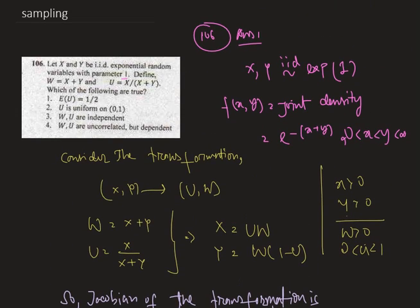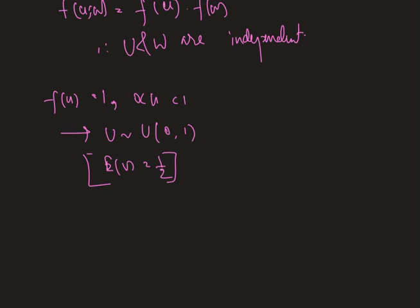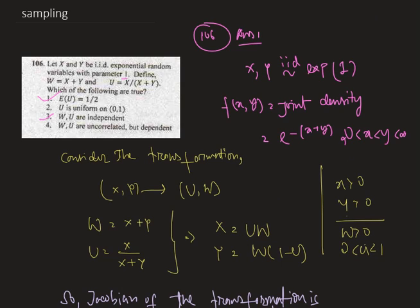So option 3 is already correct. Now f of u is equals to 1 whenever u is 0 to 1. That means u follows uniform 0 to 1. Therefore expectation of u is half. So option 1 is also correct, and option 2 is also correct. But option 4 is not correct because here we are given that w and u are uncorrelated but dependent, and that is not true. Hence only 1, 2, and 3 are correct options.